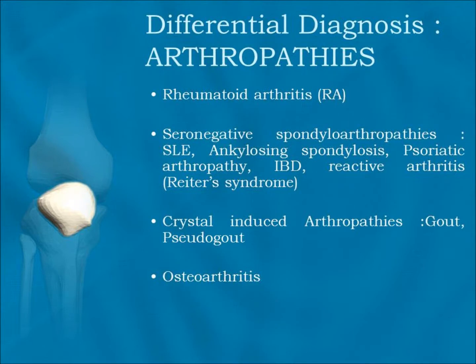Differential diagnosis — arthropathies: Rheumatoid arthritis, seronegative spondyloarthropathy, systemic lupus erythematosus, ankylosing spondylosis, psoriatic arthropathy, inflammatory bowel disease, reactive arthritis, Reiter's syndrome. Crystal-induced arthropathies: gout, pseudogout. Osteoarthritis.